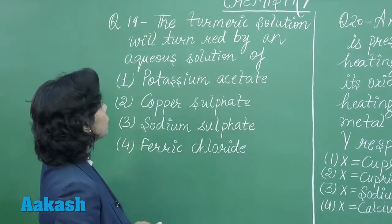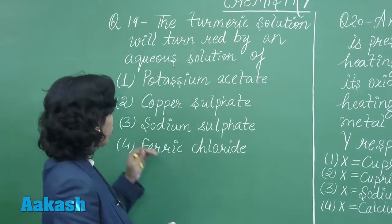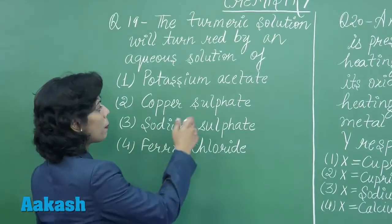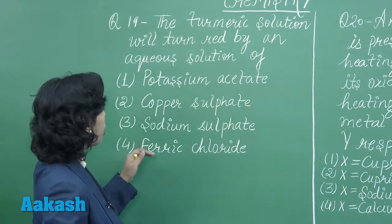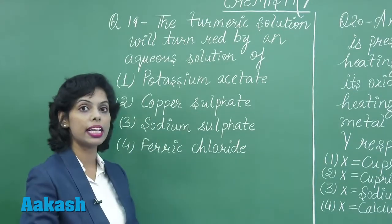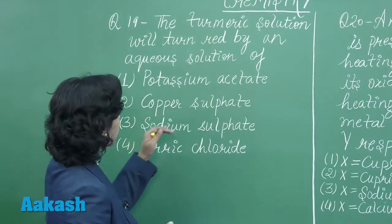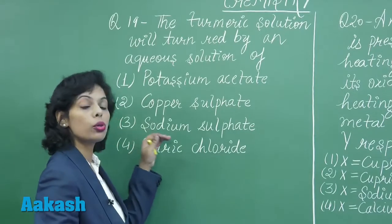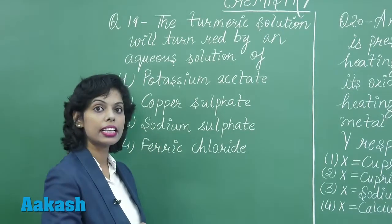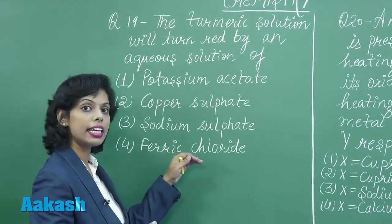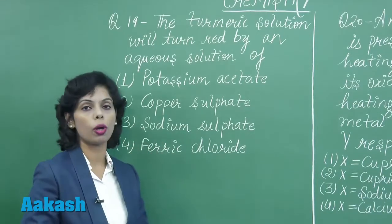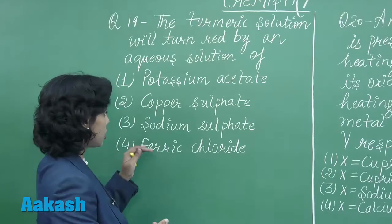So in the case of potassium acetate, only a basic solution is formed. What about the other options? Copper sulphate is the salt of copper hydroxide and sulphuric acid. Sulphuric acid is a strong acid, so in that case we have an acidic solution. Further, sodium sulphate is the salt of sodium hydroxide and sulphuric acid. Since sulphuric acid is a strong acid and sodium hydroxide is a strong base, we will have a neutral solution. This is not the correct option.